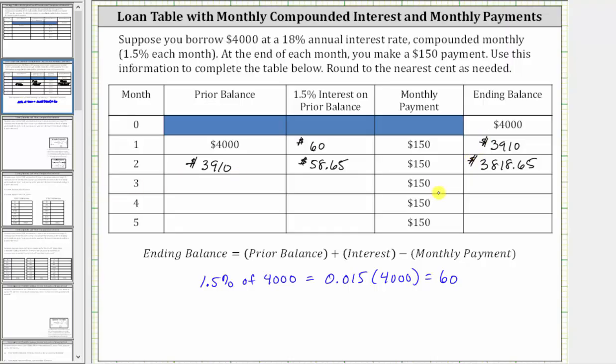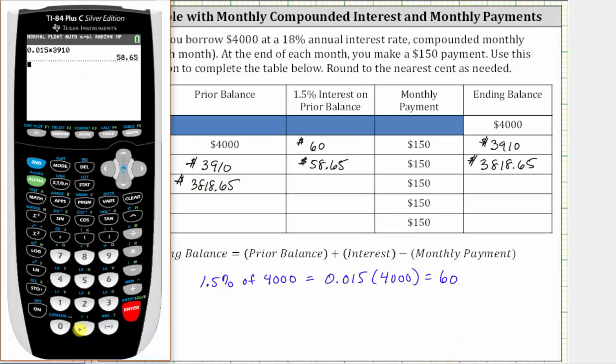This becomes the prior balance at the beginning of month three. During month three, you are charged 1.5% interest on the balance of $3,818.65. Going back to the calculator, 0.015 times 3,818.65. Rounding to the nearest cent, we have $57.28 of interest during month three.